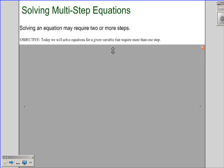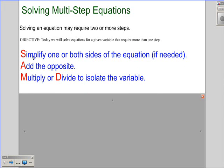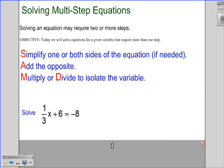We'll be solving an equation that may require two or more steps. We'll solve equations for a given variable, and the process we're going to be using is really looking at SAM or SAD. We'll be simplifying one or both sides of the equation if needed, adding the opposite or subtracting, and then multiplying or dividing to isolate the variable. Remember, it's all about balancing that equation and isolating that variable.